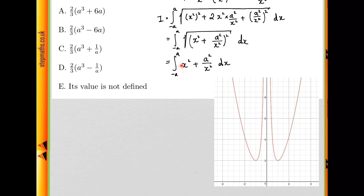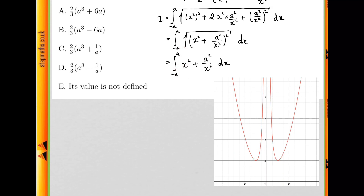Also, the interval we're integrating over is minus a to a, and zero lies in that interval. So our function isn't defined for the whole interval we're trying to integrate over. Therefore, this integral is not defined. So it's a bit of a trick question — the answer is actually E. So always remember: if you're dividing by x, always make sure that you're not dividing by zero.